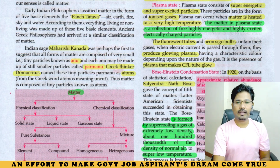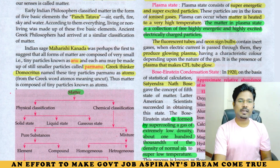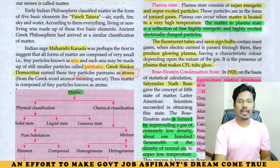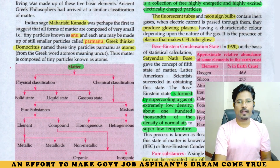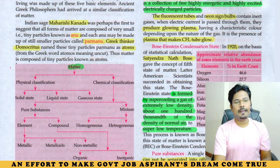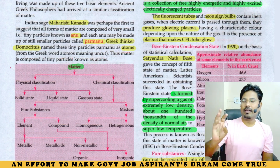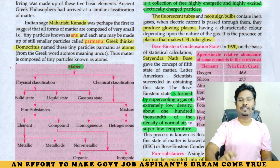Greek thinker Democritus also called these tiny particles 'atoms.' Anu in Sanskrit corresponds to atoms in Greek. The Greek word 'atomos' means 'that which cannot be cut.' Matter — Indians called it Anu, Greeks called it atoms.